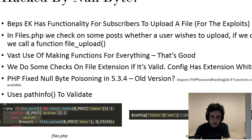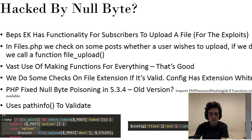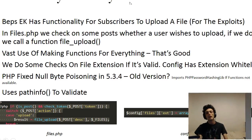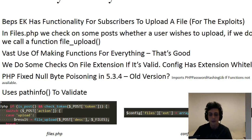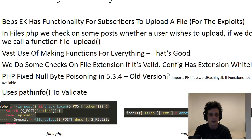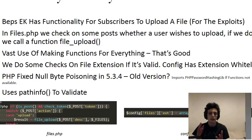One of the first interesting things is the file upload functionality. I first thought maybe it was a null byte vulnerability, but that's a very big long shot because that has been fixed for some time. The exploit kit has subscribers who register and pay a subscription fee, where they can upload their file and get a certain amount of traffic and exploits. In files.php you can upload a file, and they have a lot of functions for everything, which is programmatically very good.